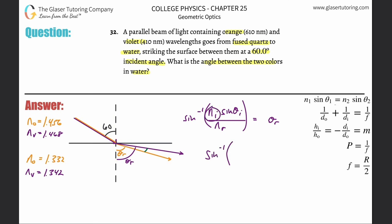Now just plug in the numbers. The index of refraction for the incident ray for the violet is 1.468, multiplied by the sine of 60, then divided by the index of the refracted ray, which is 1.342.